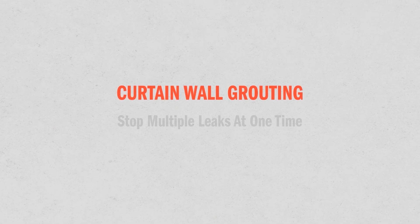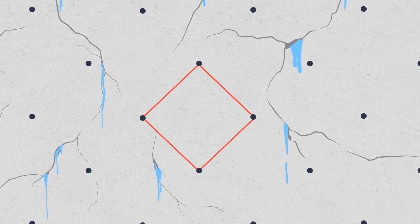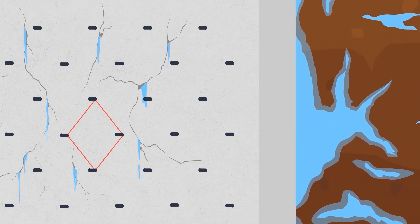Curtain wall grouting with Alchemy SpeedTech leak seal polymers allows you to stop multiple leaks in a structure at one time. In this process, holes are drilled through a structure in a diamond pattern.